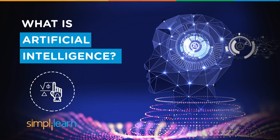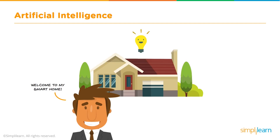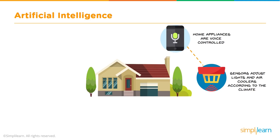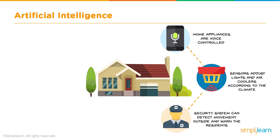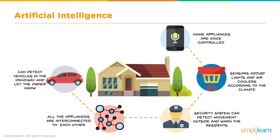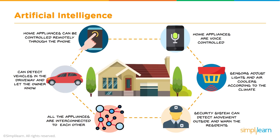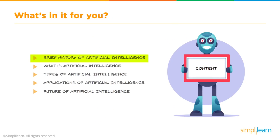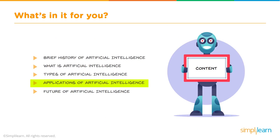My name is Richard Kirshner and today we're going to go over what is artificial intelligence. One example is a smart home. Smart homes are run by AI — home appliances are voice controlled, sensors adjust lights and air coolers according to climate, security systems detect movement and warn residents, all appliances are interconnected and can detect vehicles in the driveway, and appliances can be controlled remotely through the phone. Today we'll cover a brief history of artificial intelligence, what is artificial intelligence, types of artificial intelligence, applications, and a quick glimpse of the future.